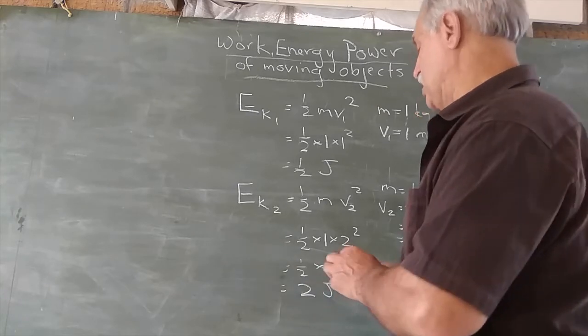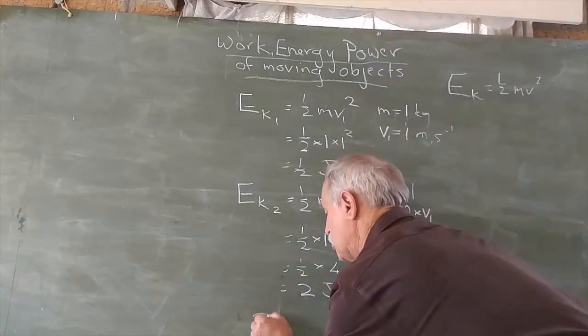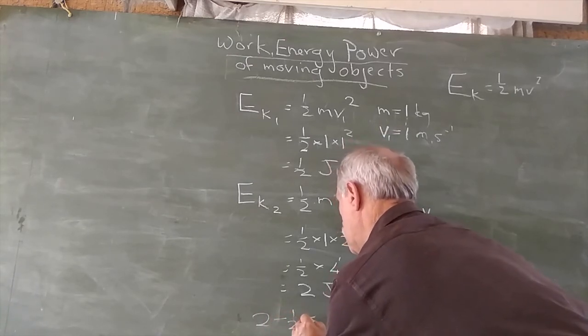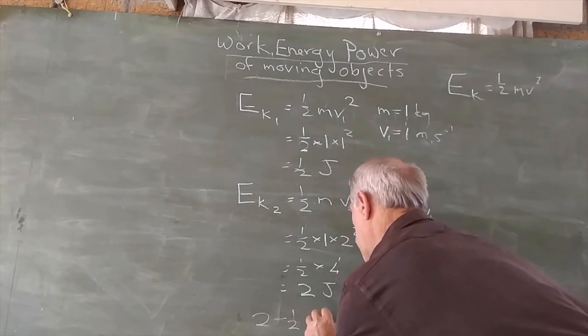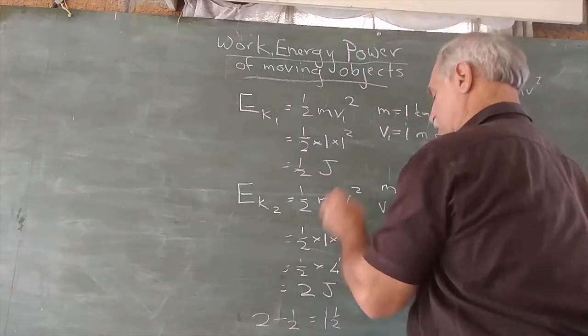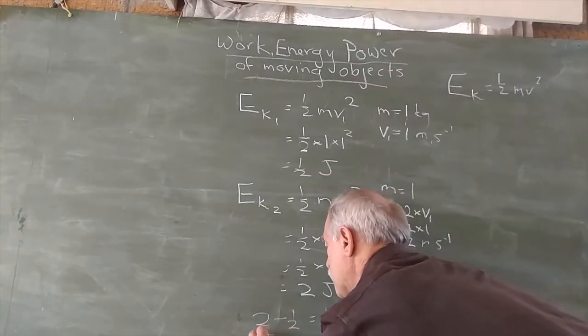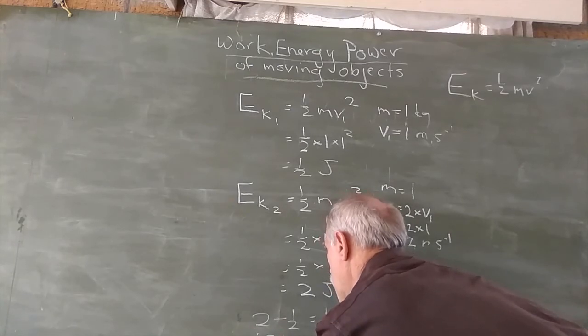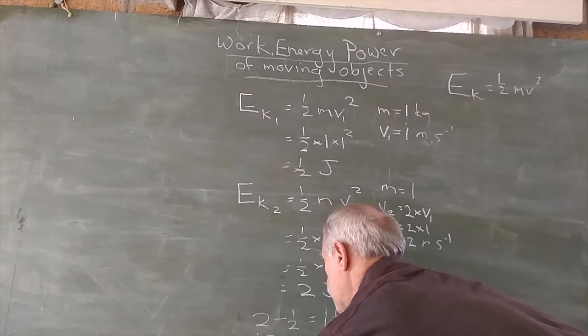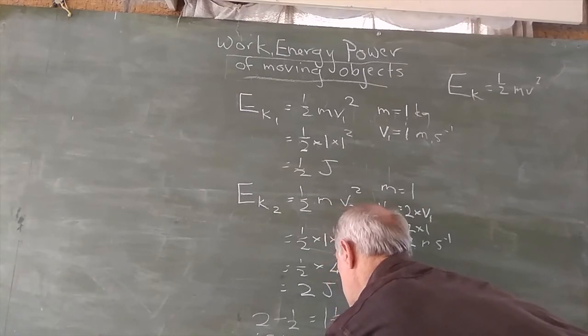But by how much has it increased? If you want to work out the increase, you take the second answer, 2, minus 1/2, which equals 1.5. And if 1/2 equals W, then 1.5 equals 3W.